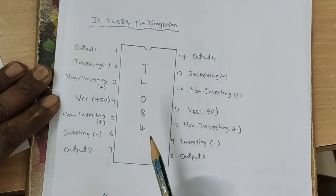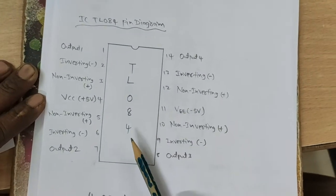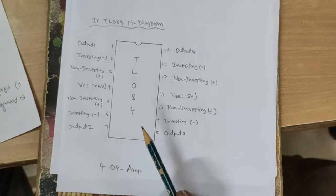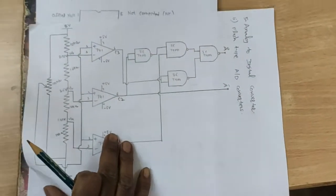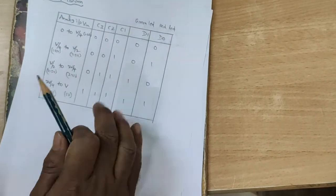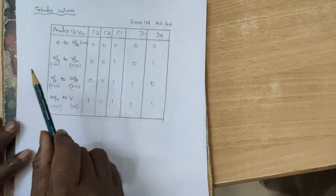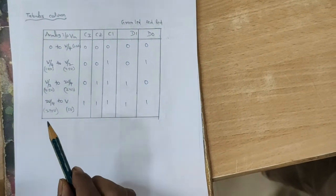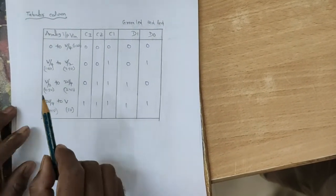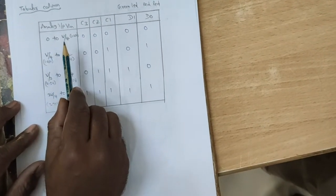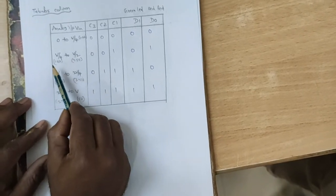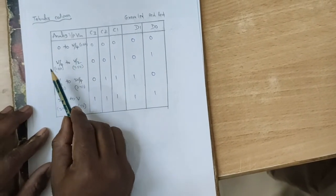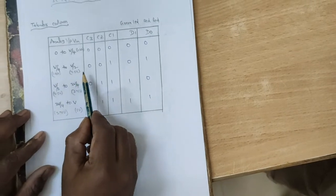In this IC TL084, 4 op-amps are there. Coming to practical implementation, this is the circuit diagram and this is the tabular form. The analog input varies from 0 to 5 volts, and you can observe 4 ranges. Starting from 0 to V/4, that is 1.25 volts, and the second stage is V/4 to V/2, that is 1.25 volts to 2.5 volts.